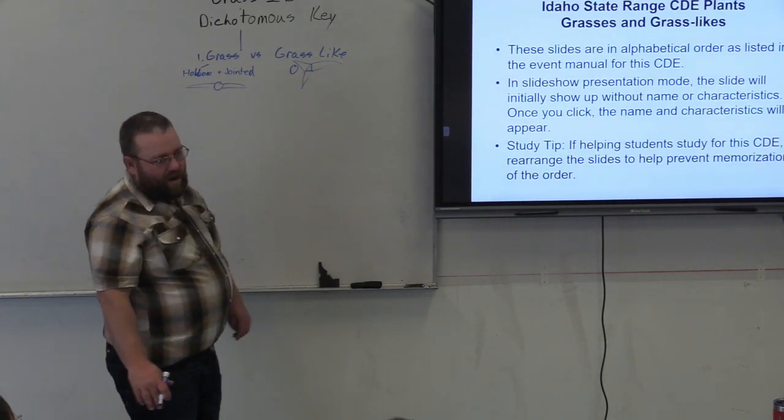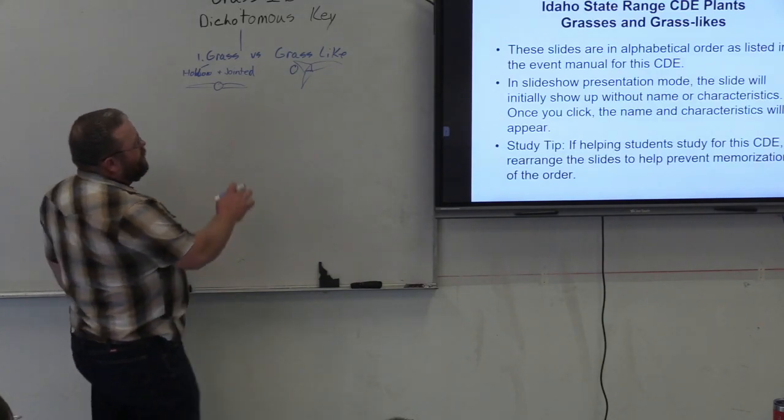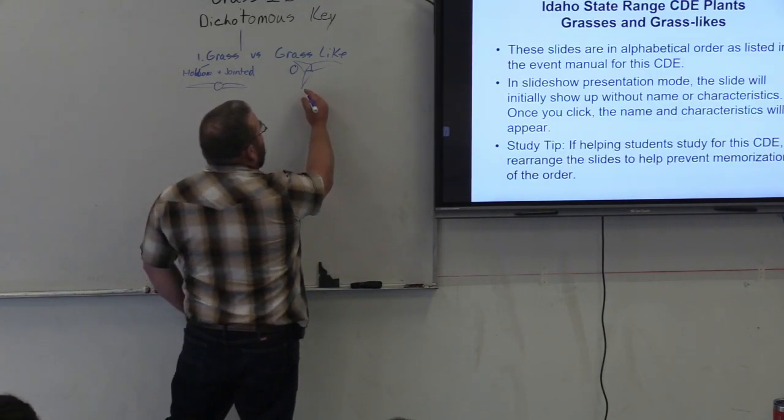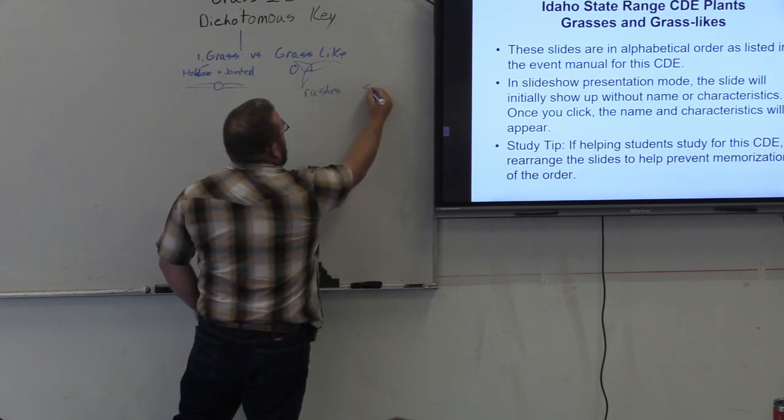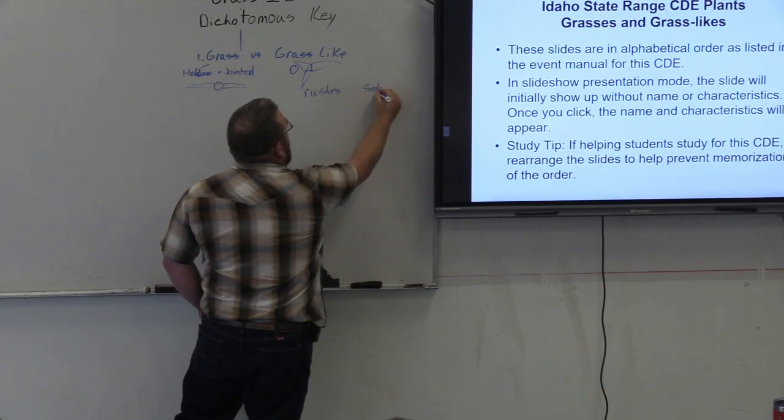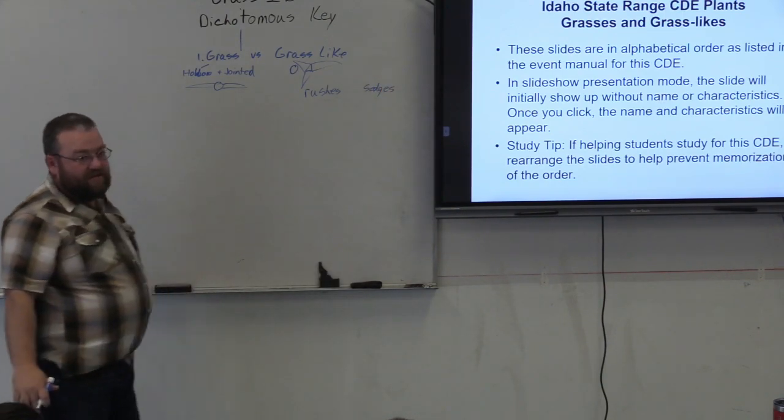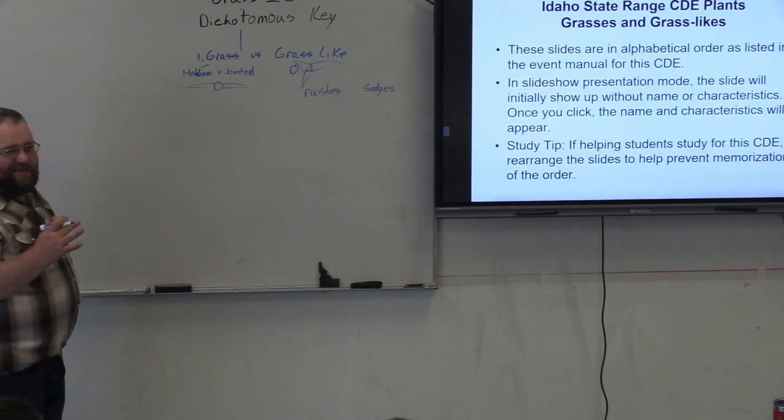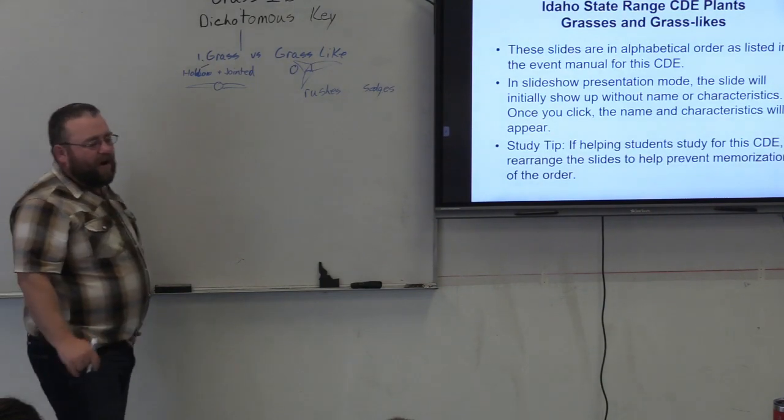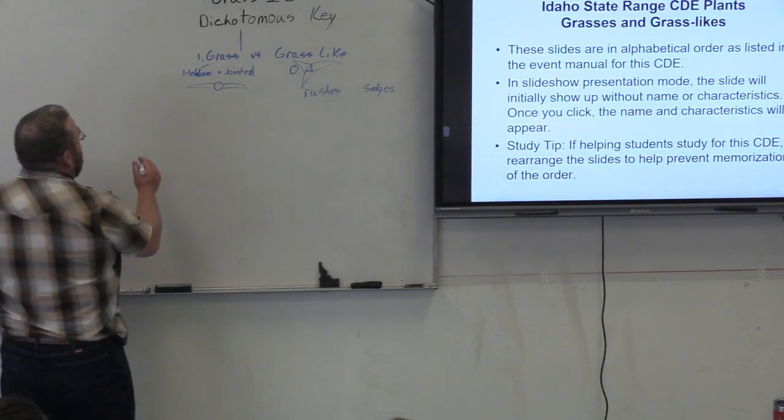There are some rushes and sedges, and they would end up being in your grass-like plant. We'll look at those and identify those later. But what I really want to focus on today is the grass identification. This is probably the hardest part of the rangeland plants to identify.